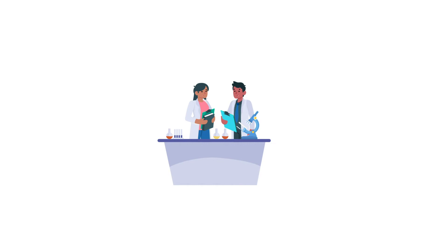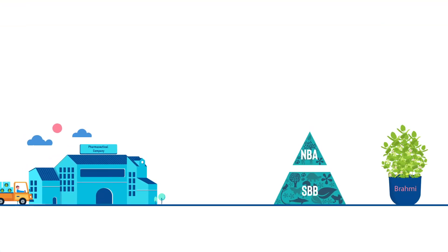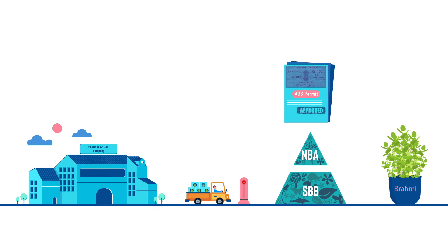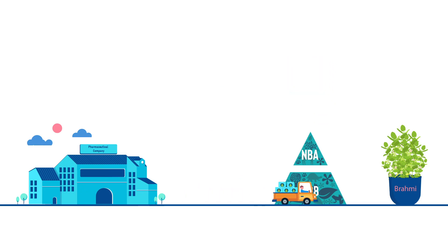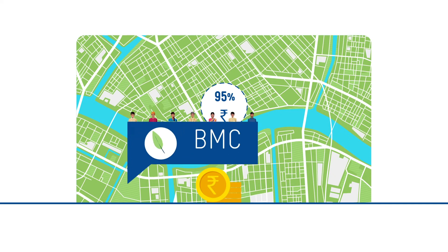How does this Act work in practice? Anyone who wants to use biological resources from India needs to obtain due permits. For example, if a company wants to use Brahmi leaves, it must seek permission from the NBA or the SBBs depending on its legal status. These permissions will be in the form of a Benefit Sharing Agreement, or an ABS Agreement. The BMC of the region from where the resources have been collected will receive 95% of this ABS amount for conserving and ensuring sustainable use of biological resources within its area.